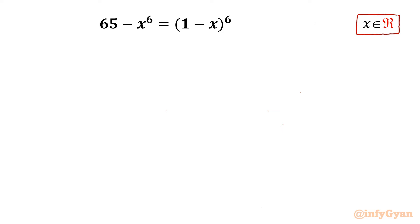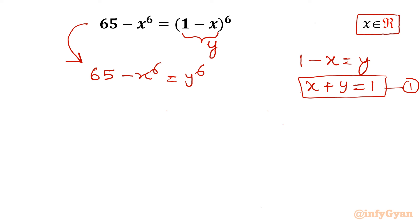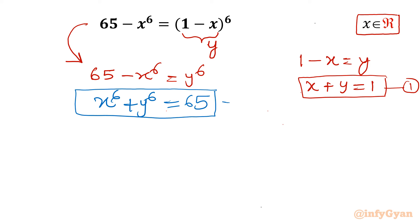Let us use the method of substitution. I will consider 1 minus x equal to y. So I can write 1 minus x equal to y, or x plus y equal to 1. This is our equation number 1. Now I will write our original equation after substitution. So I can write 65 minus x power 6 equal to y power 6, or x power 6 plus y power 6 equal to 65. This equation I will call equation number 2.